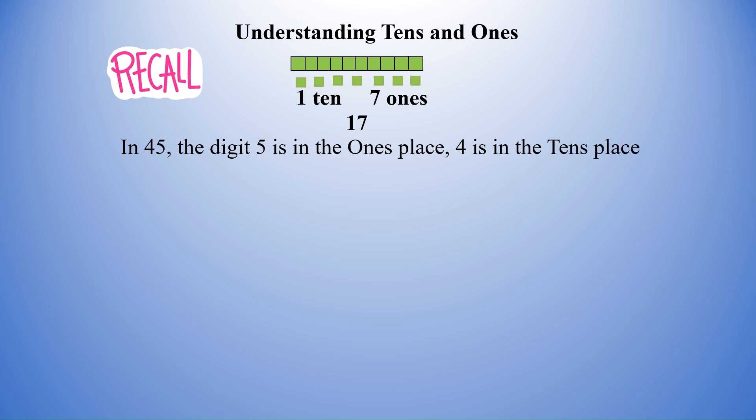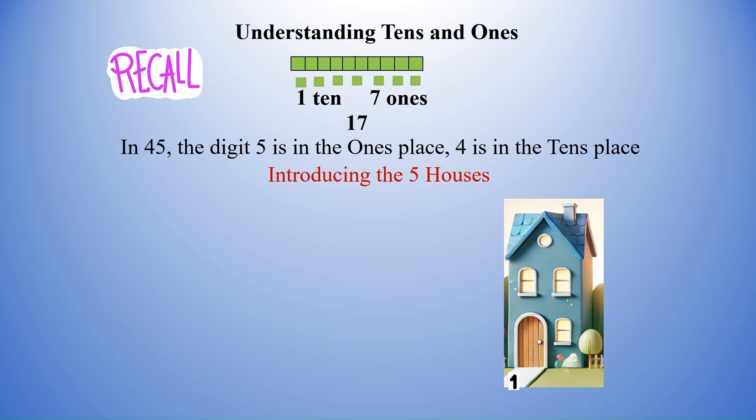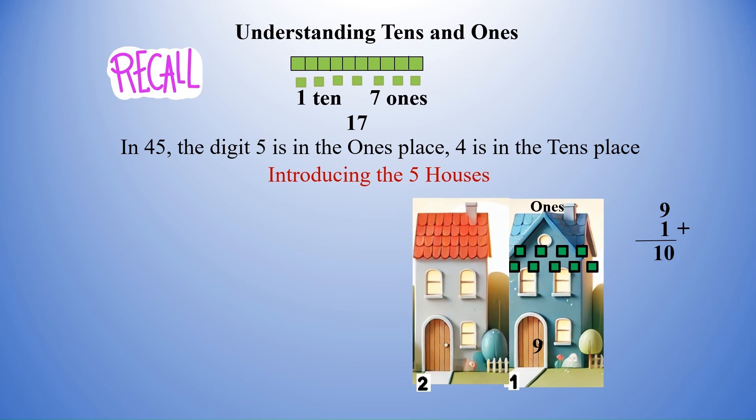Let us try to understand all about place value: ones, tens, hundreds, thousands and so on in a different way. Let us begin by introducing the 5 houses. House number 1 can accommodate only 1 single digit number from 0 to 9. Let us take the largest single digit number 9. If we add 1 to 9, it becomes 10, a 2-digit number and we need a new house. And here is house number 2, which is the tens house.